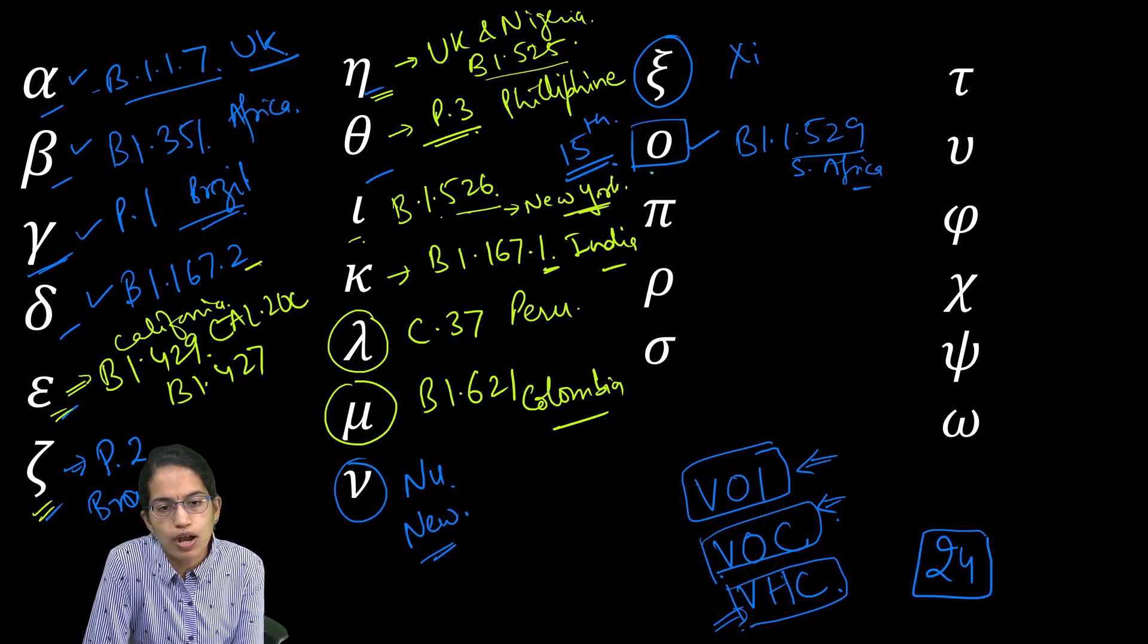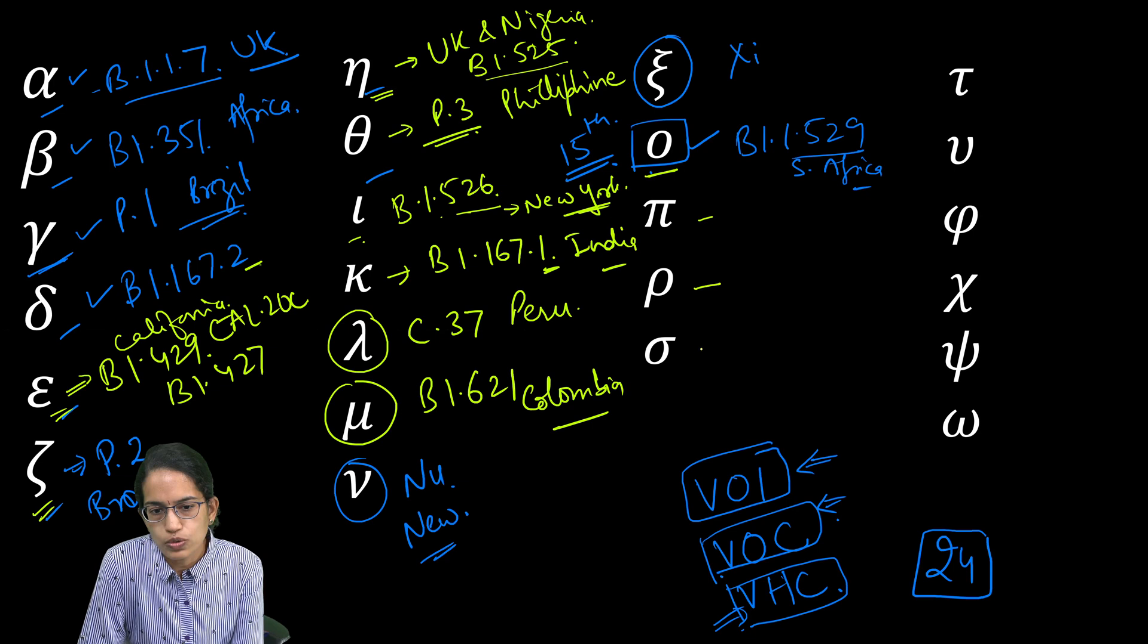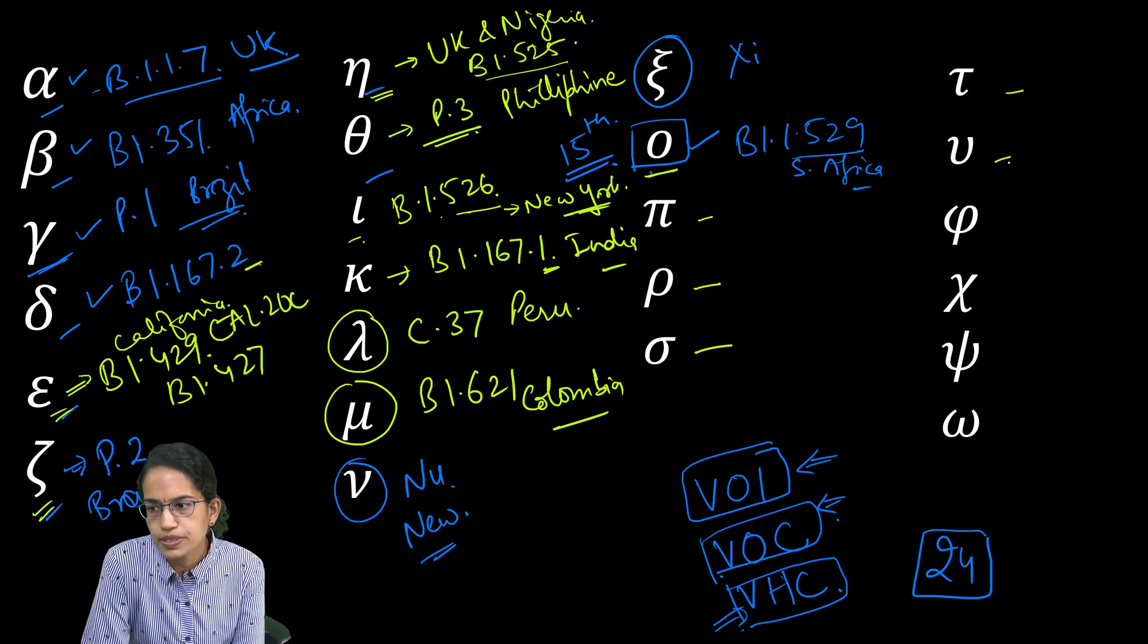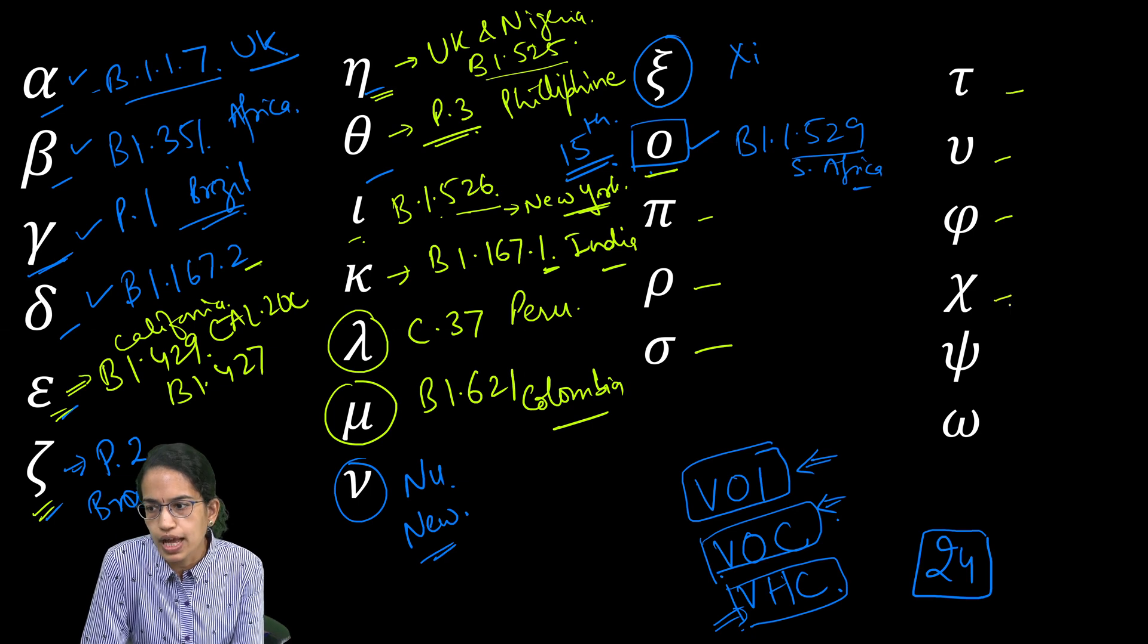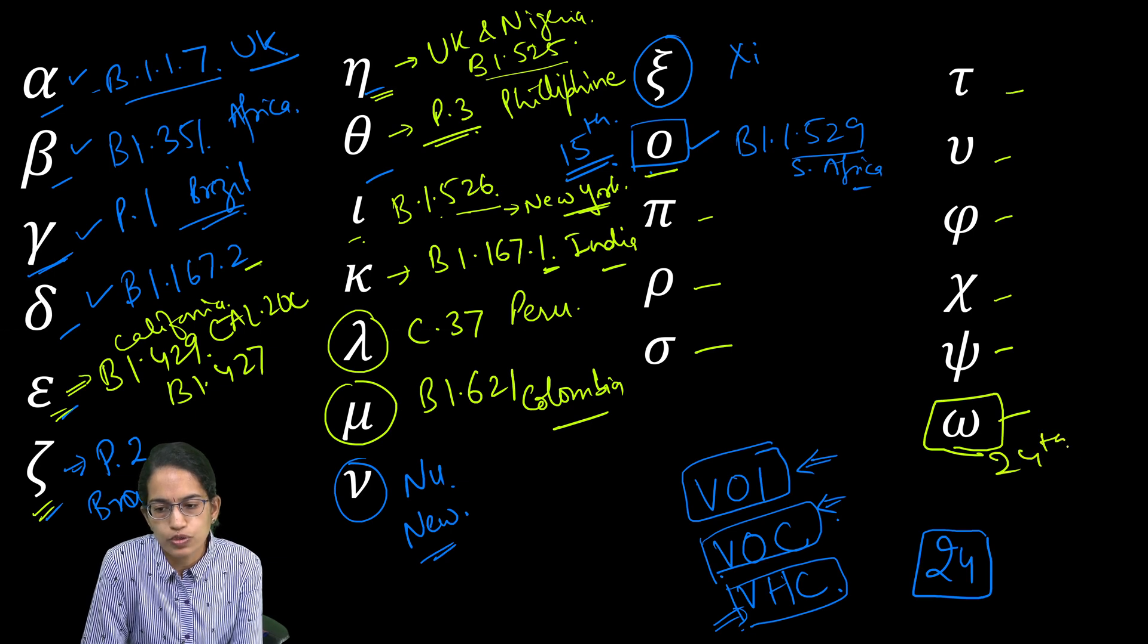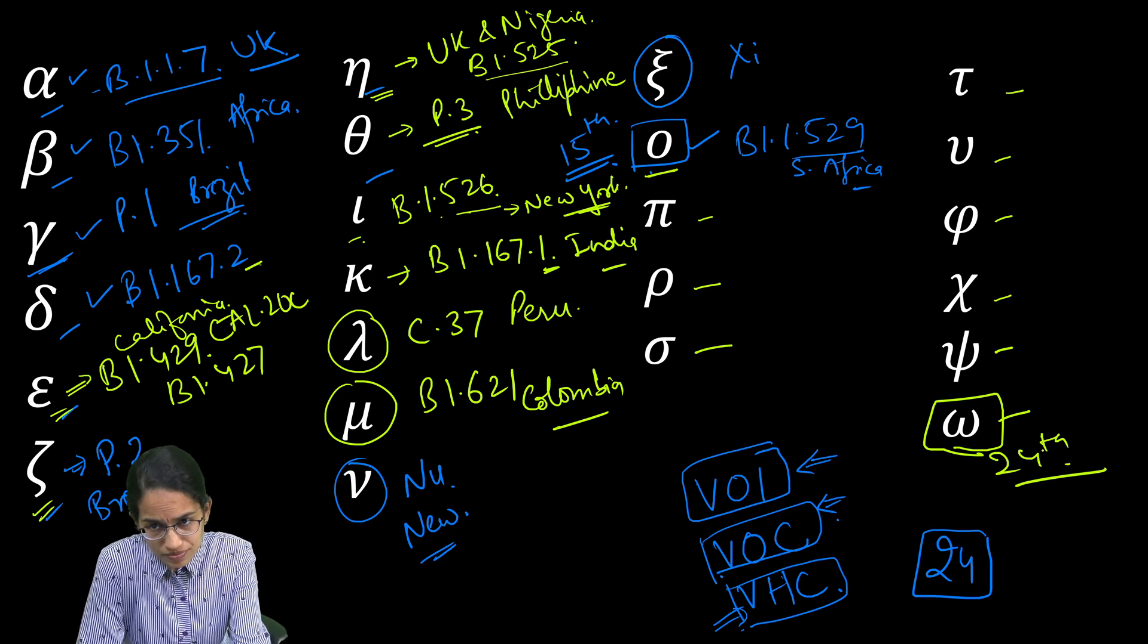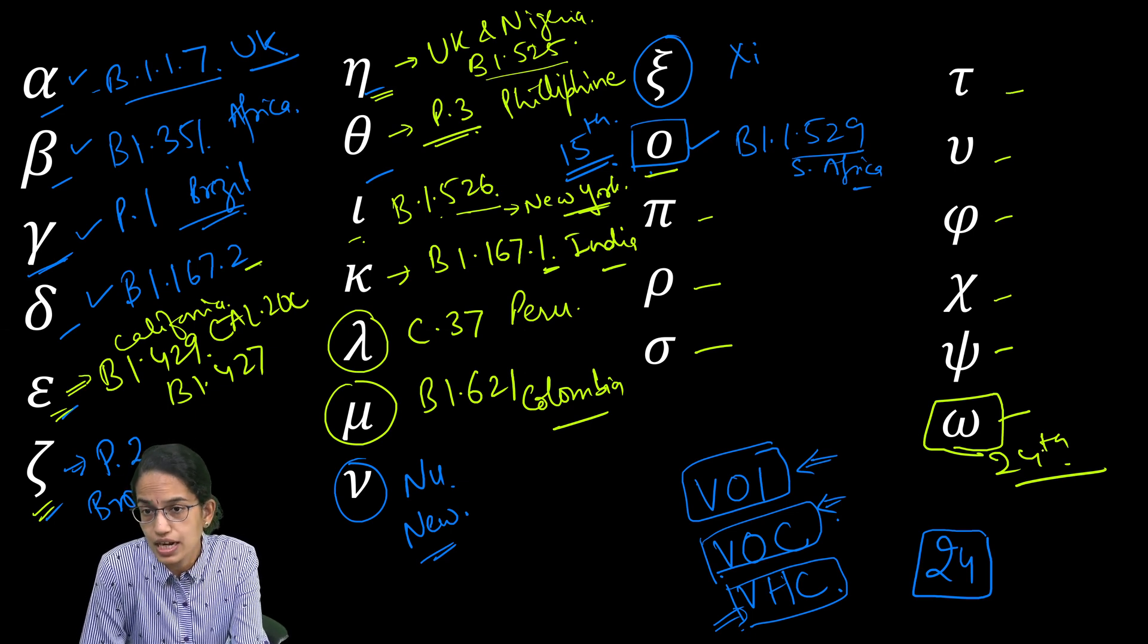So far we have come up to omicron. After omicron the naming does not stop. You have pi, rho, then you have sigma, then there is tau, upsilon, phi, chi, psi and omega. Thus omega is your last 24th variant, 24th alphabet, Greek alphabet and the list of the variants are till here.